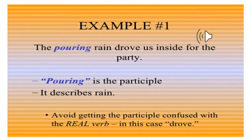In the first example: 'The pouring rain drove us inside for the party.' Here the word 'pouring' is the participle because it is describing 'rain.'